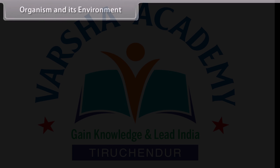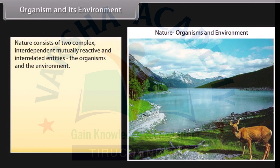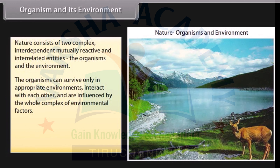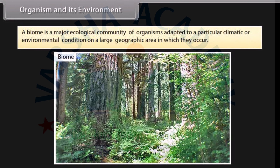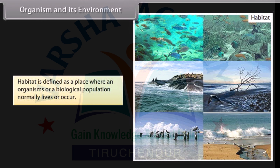Nature consists of two complex interdependent, mutually reactive and interrelated entities: the organisms and the environment. Ecology is the branch of biology that deals with the study of interactions between organisms and environment. A biome is a major ecological community of organisms adapted to a particular climatic and environmental condition on a large geographic area. Habitat is defined as a place where organisms or a biological population normally live or occur.